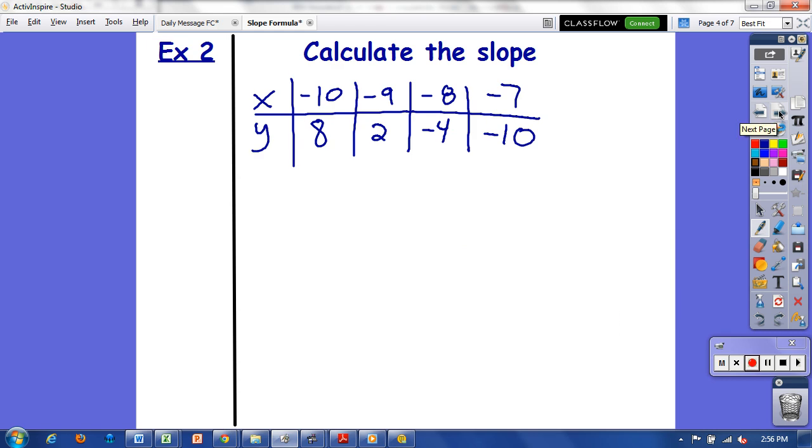Next example. Here I have a table. When you have a table each of these is an ordered pair, it's an x and a y. Those are your ordered pairs. I'm going to label my x₁ and y₁, so this is x₁, y₁, x₂, y₂.